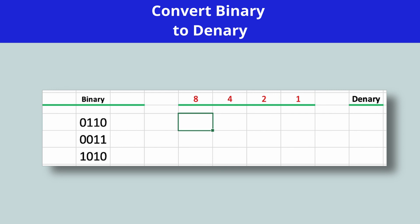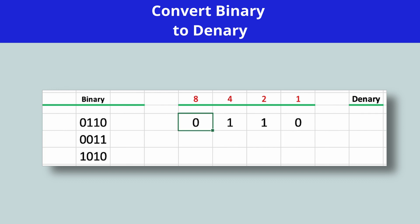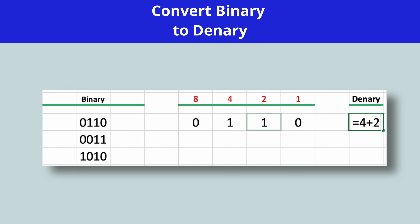I'm going to take my binary number and put each bit in a column. If there's a zero I'm not going to do anything; if there's a one I want to add the value for that column. Here there's a zero so I won't do anything. Here is a one so I will add four, then we have the two so I will add two, and then zero in the ones so I don't do anything. So binary 0110 becomes denary 6 — four plus two.